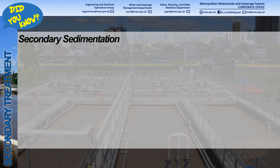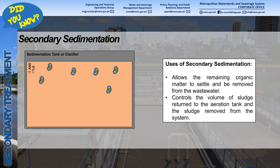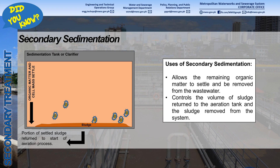After aeration, a secondary sedimentation tank is constructed to allow the remaining organic matter and cell mass to settle. This process further improves the quality of the treated wastewater. The settled organic matter and cell mass form a semi-solid matter called sludge. To maintain the concentration of microorganisms, the volume of sludge returned to the aeration tank and sludge removed from the system is controlled.